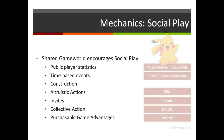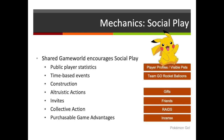This maps onto Pokemon Go quite well: public player statistics are your player profile and the visible pets you have with you; time-based events occur through Team GO Rocket balloons; you can gift other people and make friends; raid battles are an example of collective action; and purchasable game advantages include things like incense to attract additional Pokemon to your location. So that's a quick whistle-stop tour of the technologies and mechanics typical in mixed reality games. In the next video we're going to look at navigation and movement in a bit more detail, because it's so critical — see you there.